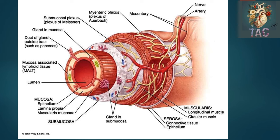Outer to the muscularis externa is the serosa or adventitia, which depends upon the presence of mesentery — that is, whether the peritoneum is covering the outer layer or not. If the outer layer is covered by the peritoneum, it is called serosa; if there is no peritoneum, then the outer layer is called adventitia.